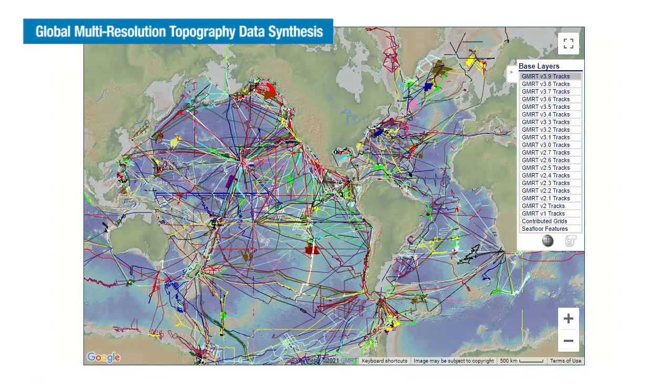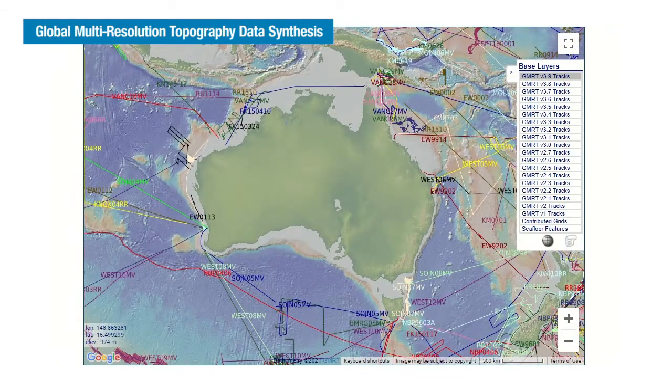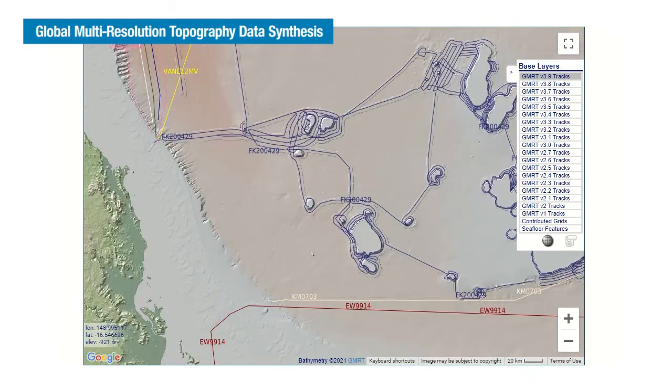The GMRT AusSeabed tool is based on the global multi-resolution topography synthesis that's been developed at Columbia University's Lamont-Doherty Earth Observatory. It's a way to deliver the best resolution bathymetry data to users based on their specific use cases and areas of interest. I'm really excited about this AusSeabed GMRT collaboration. We're going to be able to grow the data compilation much faster by working together and to deliver a better product to the user community around the world.